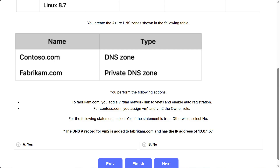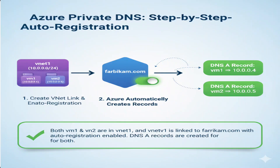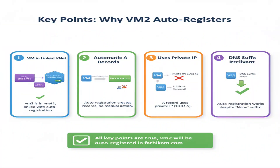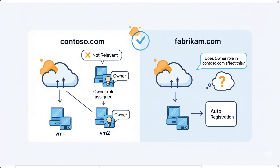Correct answer: Yes — the statement is true. When you create a virtual network link to Fabrikam.com and enable auto-registration, Azure automatically creates DNS A records for all VMs in VNet1. Since both VM1 and VM2 are in VNet1, which is linked to Fabrikam.com with auto-registration enabled, DNS A records are created for both VMs. Key points: VM2 is in VNet1 linked to Fabrikam.com; auto-registration creates A records automatically with no manual action required; the A record uses VM2's private IP, not the public IP; even though VM2 shows none for DNS suffix, auto-registration still works. The fact that VM1 and VM2 were assigned owner roles to Contoso.com is irrelevant — that doesn't affect auto-registration behavior in Fabrikam.com.